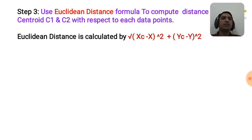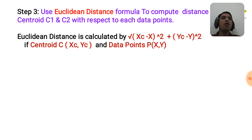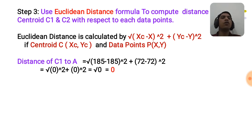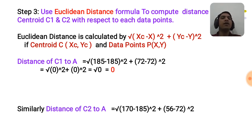We will use the Euclidean distance formula to compute distances: square root of (xc minus x) squared plus (yc minus y) squared, where c has coordinate (xc, yc) and data point p has coordinate (x, y). The distance of c1 to data point A is the square root of (185 minus 185) squared plus (72 minus 72) squared, which equals 0.